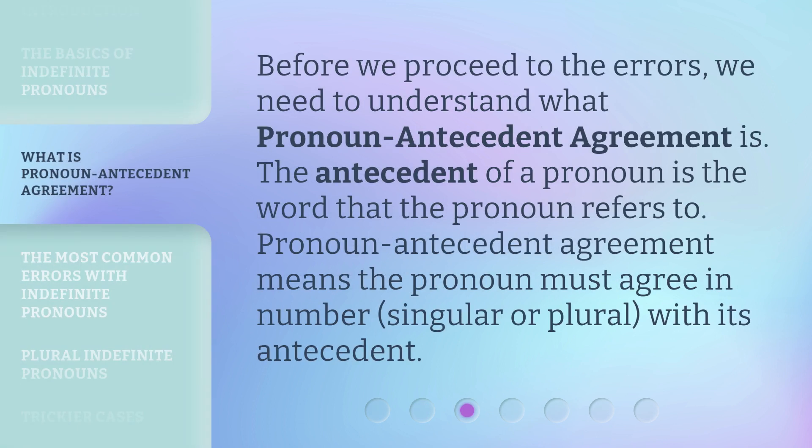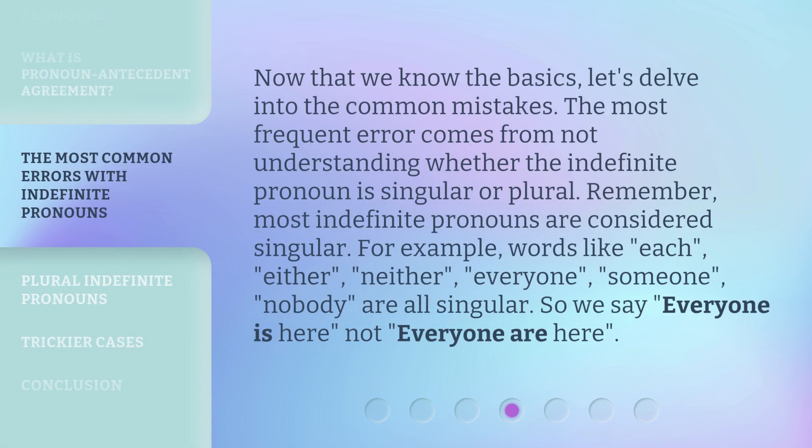Before we proceed to the errors, we need to understand what pronoun-antecedent agreement is. The antecedent of a pronoun is the word that the pronoun refers to. Pronoun-antecedent agreement means the pronoun must agree in number — singular or plural — with its antecedent.